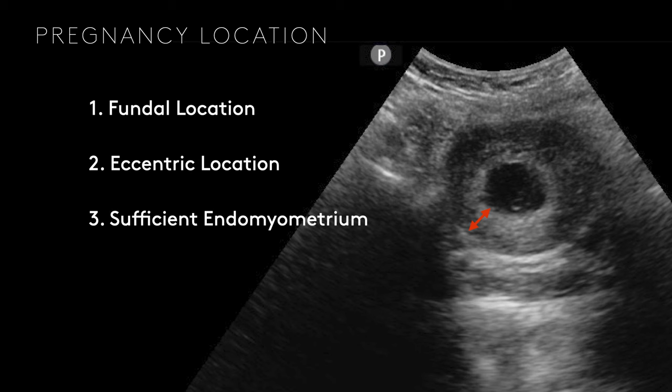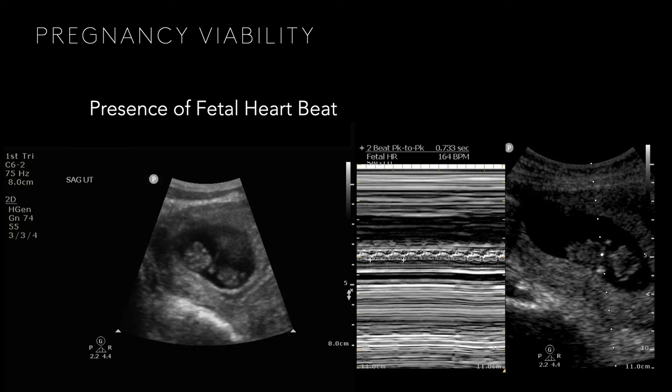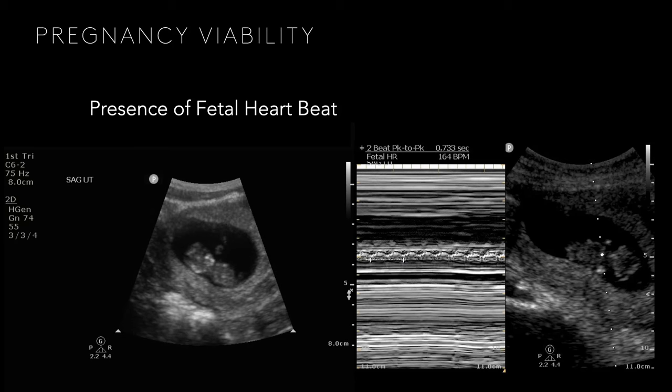Those are the three criteria for location: fundal, eccentric off the endometrial stripe, and sufficient surrounding tissue. If we don't see all three, we call it a pregnancy of unknown location. That fits further down the algorithm and will be covered in a different lecture. The second question: is this baby viable? Viability here means if we do nothing, will it continue to live — not whether it could survive delivery.